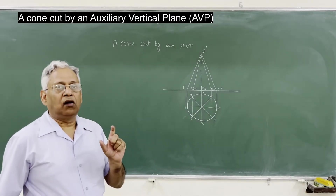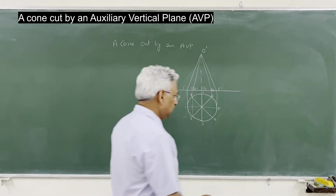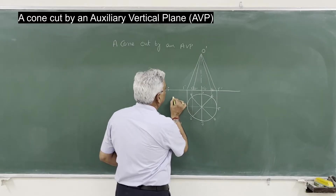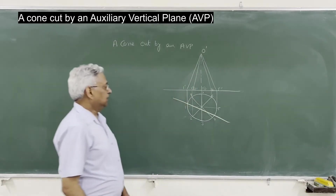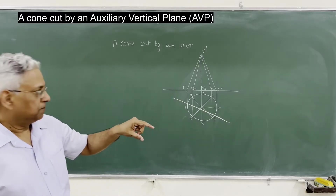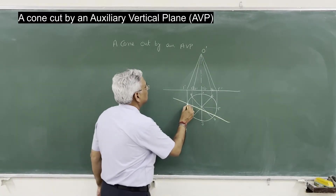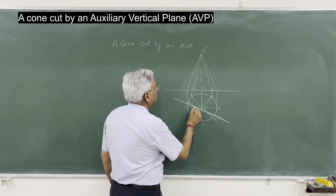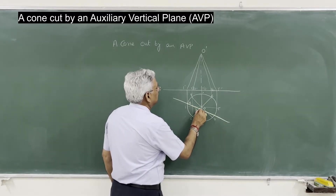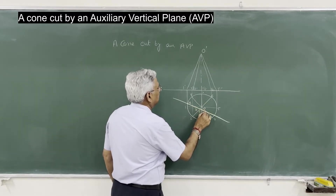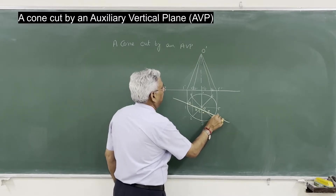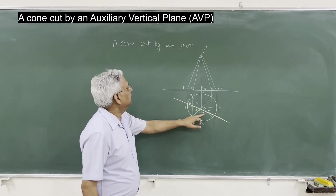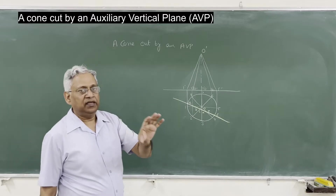Now it is cut by an auxiliary vertical plane. Draw the auxiliary vertical plane here — this is the auxiliary vertical plane which is cutting this cone at different points. Let us say point A, then O, then B, C, D, E, and F. These are the six points — A, B, C, D, E, F — where this auxiliary vertical plane will cut the solid.